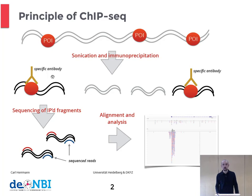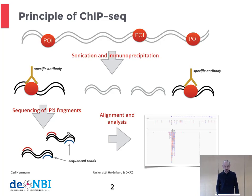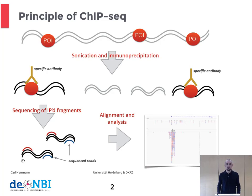We see at the bottom left of the slide the fragments that have been selected by the chromatin immunoprecipitation. Now these fragments can be identified and sequenced using high-throughput sequencing. What is actually sequenced is the 5' and the 3' ends of these fragments, indicated here by these red and blue fragments.